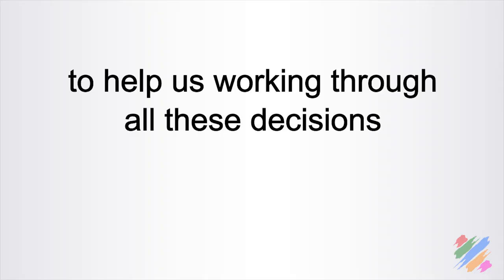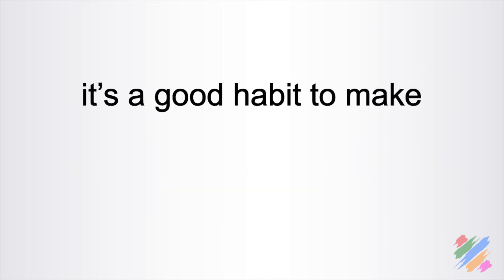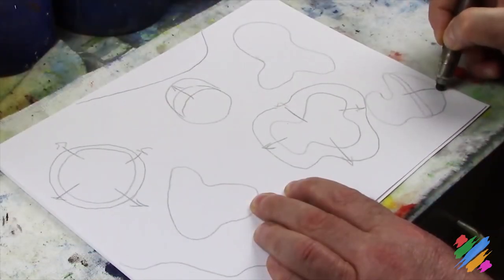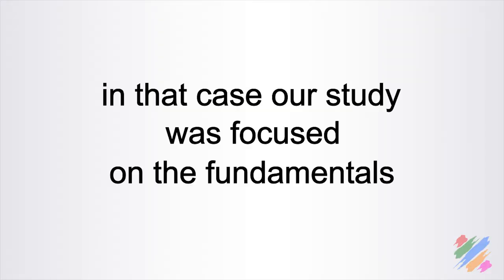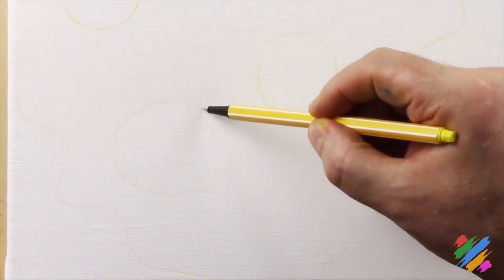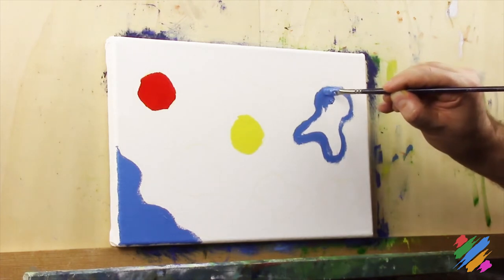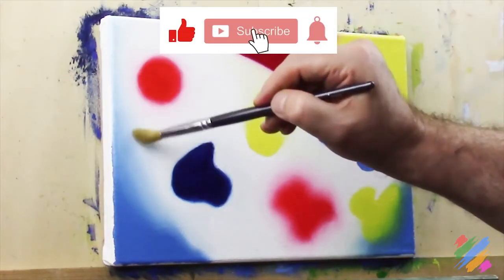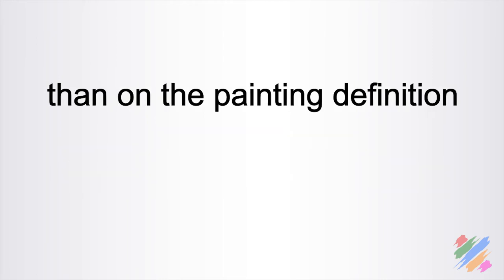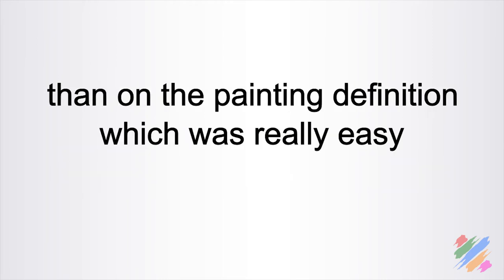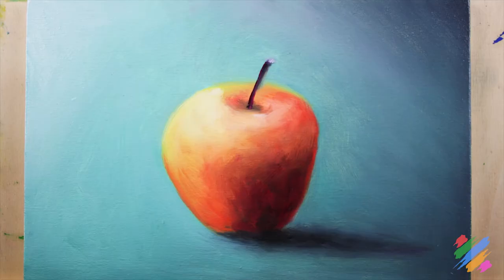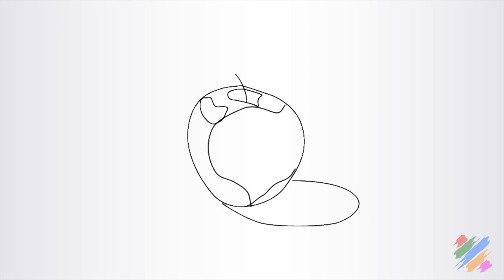To help us work through all these decisions and define what we want to paint, it is a good habit to make some preliminary studies. We actually already did one when we completed our first abstract painting — in that case, our study was focused on the fundamentals: we had to decide where to position our figures, their colors, how we were going to fit them in the painting, whether to use a sharp border or a fading, and what type of fading. Normally, the preliminary study can span more than one table. If the scene is very easy, we can decide with just one drawing or even without one.